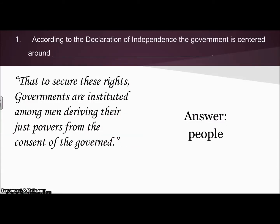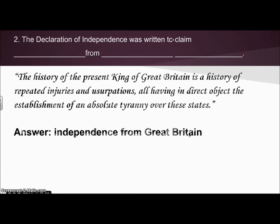Number one says, according to the Declaration of Independence, the government is centered around blank. In the Declaration we see that it says that to secure these rights, governments are instituted among men, deriving their just powers from the consent of the governed. So the answer is that the government is centered around the people.